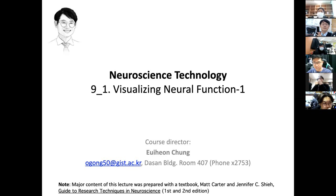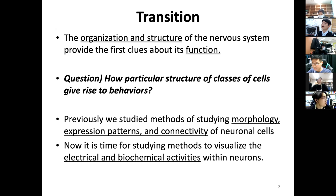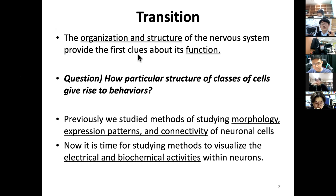We'll start talking about neural function and how to visualize it. Last week we discussed visualization of neural structure, so now let's move on to neural function. The organization and structure of the nervous system is the first clue given about its function.